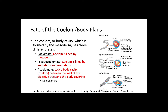Now to discuss the fate of the coelom and body plans. We've already discussed coelom formation for protostomes and deuterostomes in terms of whether the mouth or the anus develops first. But now to go a little bit deeper — the coelom, or body cavity, which is formed by the mesoderm, has three different fates, corresponding to three essentially different types of animals.